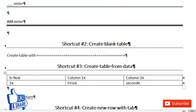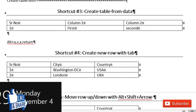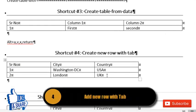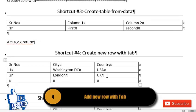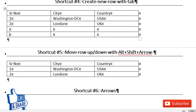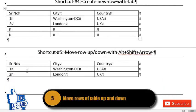The fourth shortcut: to add a new row to a table, just go to the end of the last column in the last row and press Tab to get a new row automatically.